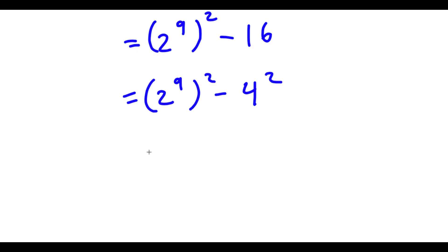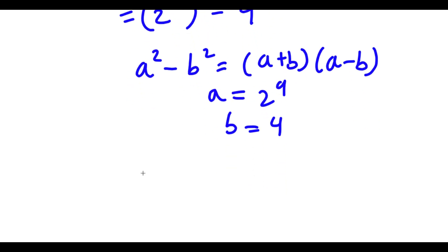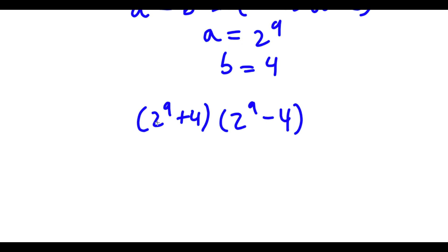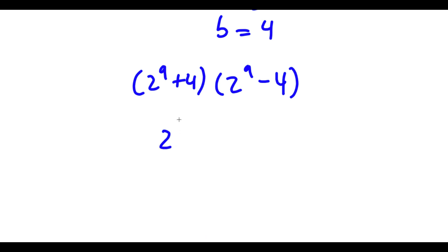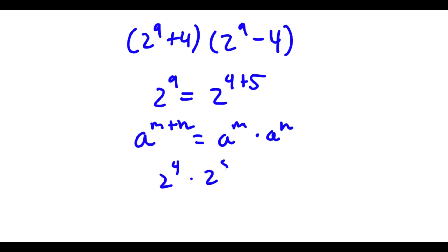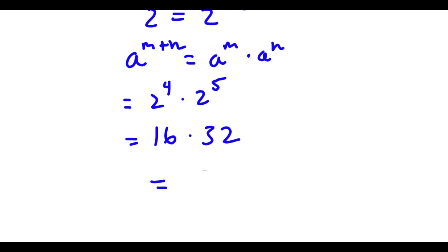Now because both of these are to the power of 2, if I have something in the form a squared minus b squared, this is equal to a plus b times a minus b. So in this case, a is equal to 2 to the power of 9 and b is equal to 4. So I have 2 to the power of 9 plus 4 times 2 to the power of 9 minus 4. Now 2 to the power of 9 — let's solve for this. It's the same thing as 2 to the power of 4 plus 5, which equals 2 to the power of 4 times 2 to the power of 5. 2 to the power of 4 is 16 and 2 to the power of 5 is 32, so I have 16 times 32, which is 512.